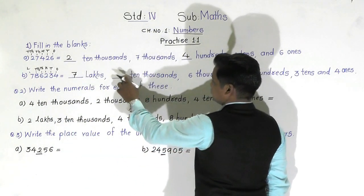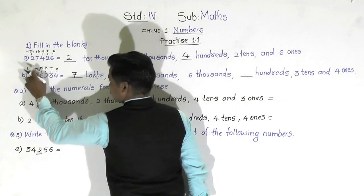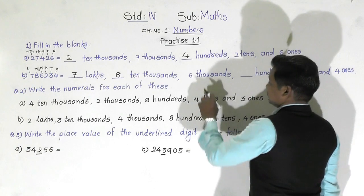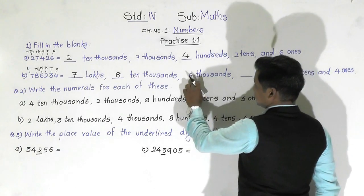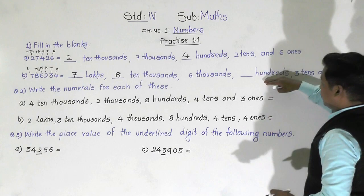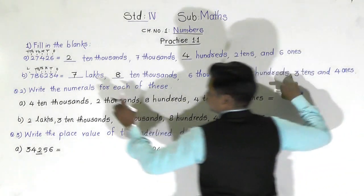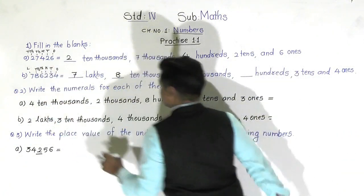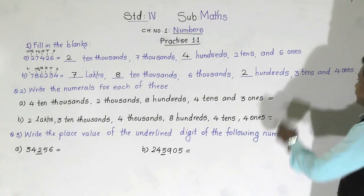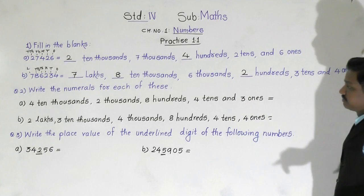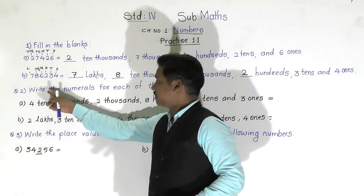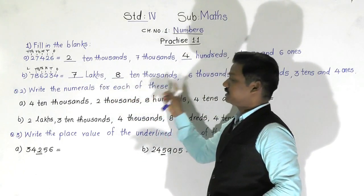At the ten thousands place there is eight. At the thousands place there is six — so six thousand. At the hundreds place there is two — two hundreds. And three tens, four ones are already given. Now moving to the second question: write the numerals for each of these.